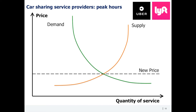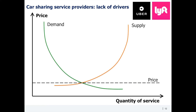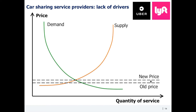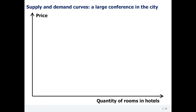Uber and Lyft use the same logic when some locations experience a lack of drivers. The supply curve moves to the left, as there are fewer drivers and thus fewer commute services can be offered at each price point. Uber and Lyft increase prices, which helps not only to avoid a deficit but also to motivate other drivers to work. These shifts happen not only intraday but in the short and long term as well.